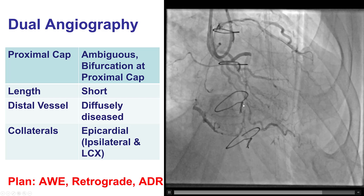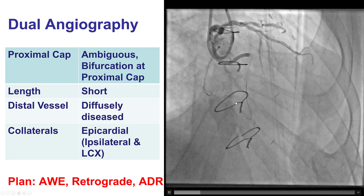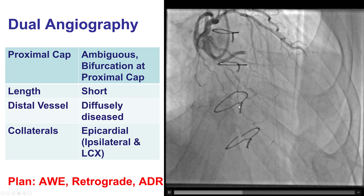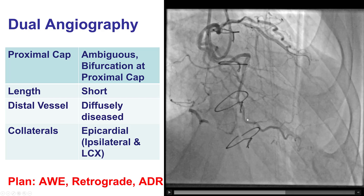We do have an RCA CTO in the mid-right coronary artery with a blunt proximal cap right at the takeoff of an acute marginal branch. The length of the occlusion was short, the distal vessel was diffusely diseased, and the vessel was filling via epicardial collaterals from the left. There were also some ipsilateral epicardial collaterals.